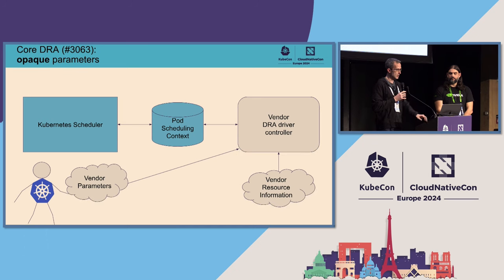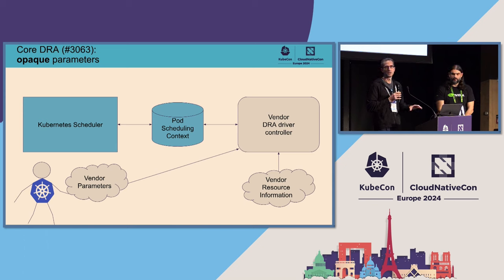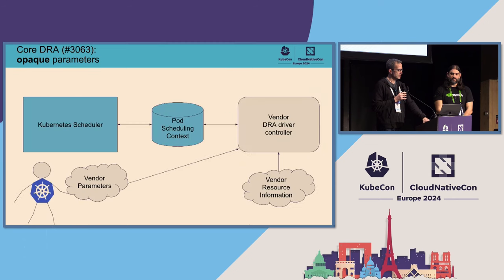The problem is that there has to be some kind of communication protocol between the scheduler and the driver. That is the pod scheduling context in the middle — a built-in type where the Kubernetes scheduler stores some information.